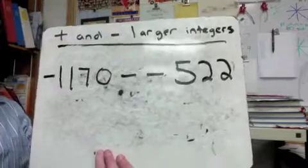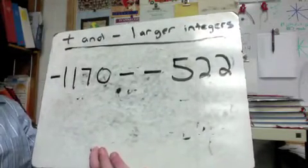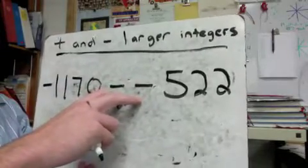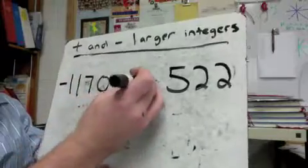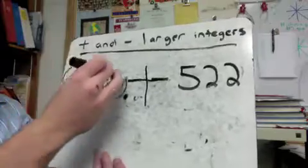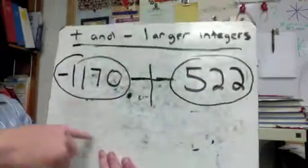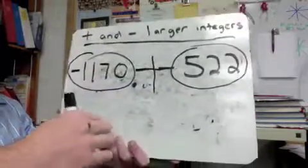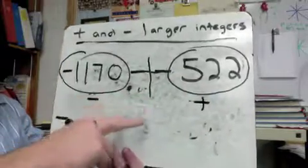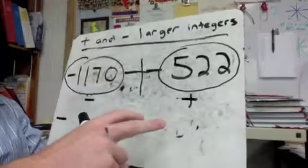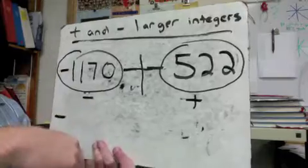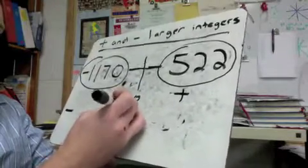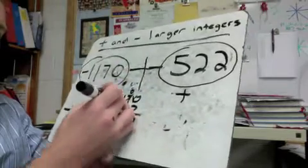Next: negative 1170 minus negative 522. This problem isn't set up how we need it — we have two negatives right beside each other, which become one big plus. Now I've got 1170 negatives and 522 positives. Clearly I have a lot more negatives than positives, so my answer is going to be negative. After canceling positives with negatives, I just need to find how many negatives remain: 1170 minus 522 is 648, so the answer is negative 648.